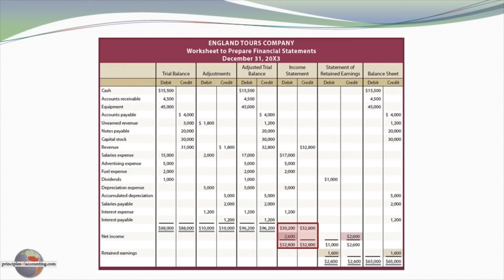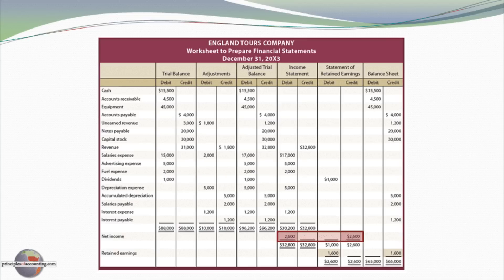Starting with the income statement, notice that credits are $32,800 and debits are $30,200. That tells us that credits — revenues — exceed debits — the expenses — by $2,600. We have a $2,600 net income. A debit is entered there to balance out that column, with a corresponding credit recorded in the statement of retained earnings to represent the transference of net income into the statement of retained earnings.